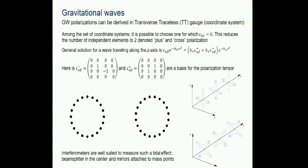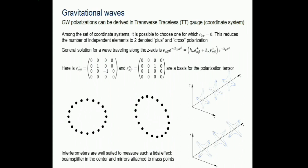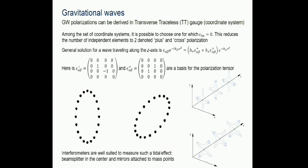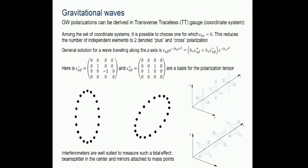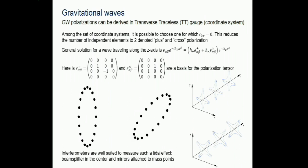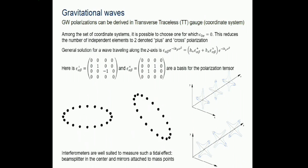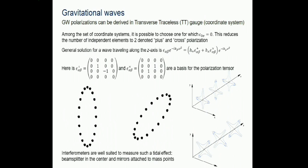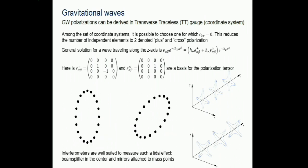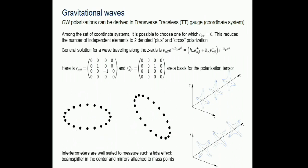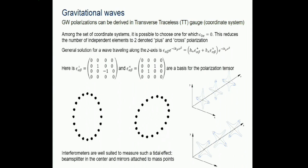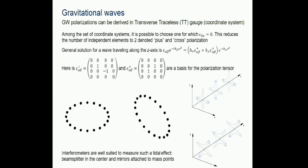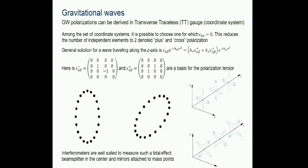Interferometers are ideal for measuring this. A laser hits a beam splitter at the center; mirrors are attached to the test masses at the end of each arm. When one arm becomes larger, the other becomes shorter - a very nice way to measure the effect of a gravitational wave. The response depends on the direction from which the gravitational wave arrives.